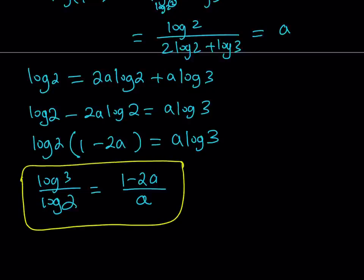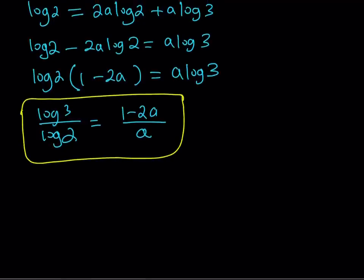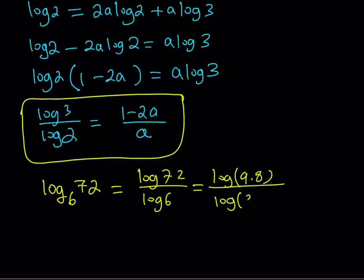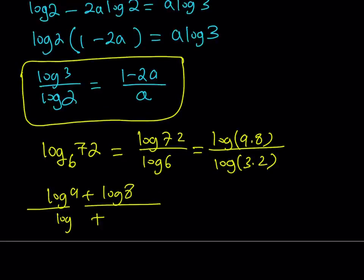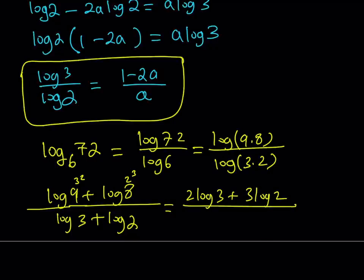Great. So now, if I can get the same expression in the given expression, which is log base 6 of 72, then I should be able to substitute. But how can I break it down? Again, using change of base, I can write it as log 72 over log 6. And then separate it as log 9 times 8. Make sure that you are separating the different primes. You can write this as log 9 plus log 8 divided by log 3 plus log 2. And then log 9 is 3 squared, so it becomes 2 log 3. Log 8 is 2 cubed, and that becomes 3 log 2. And the bottom is good.